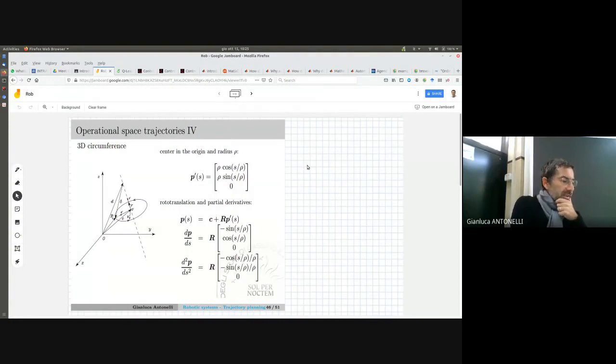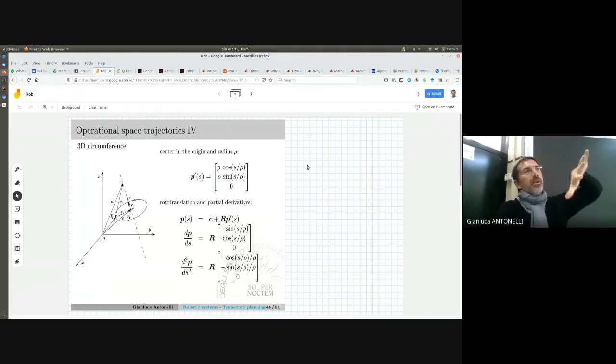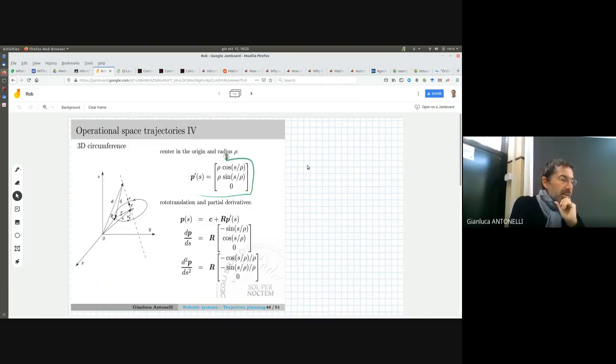So how this circle is built. It's a circle with a certain origin and whatever kind of orientation, of course. We can select what we want. First of all, we build a circle with center in the origin and radius rho.